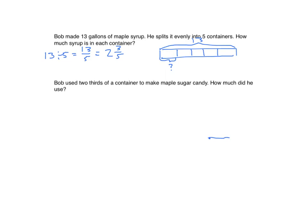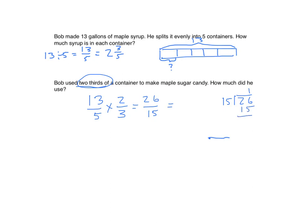Using the information from the previous problem, I want to find two-thirds of that amount. It's easiest to start with my improper fraction. I have thirteen-fifths and I want to find two-thirds of it, so we multiply by two-thirds. Thirteen times two is twenty-six, and five times three is fifteen. I can now change that into a mixed number by dividing: fifteen goes into twenty-six once with a remainder of eleven. My remainder becomes my numerator and my divisor is my denominator, so it would be one and eleven-fifteenths gallons.